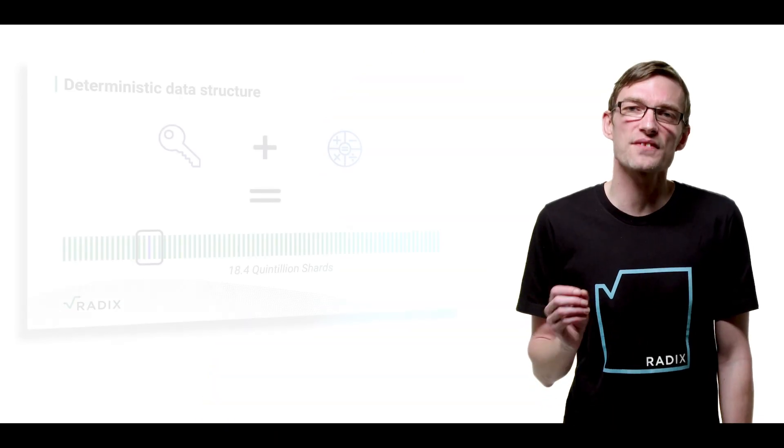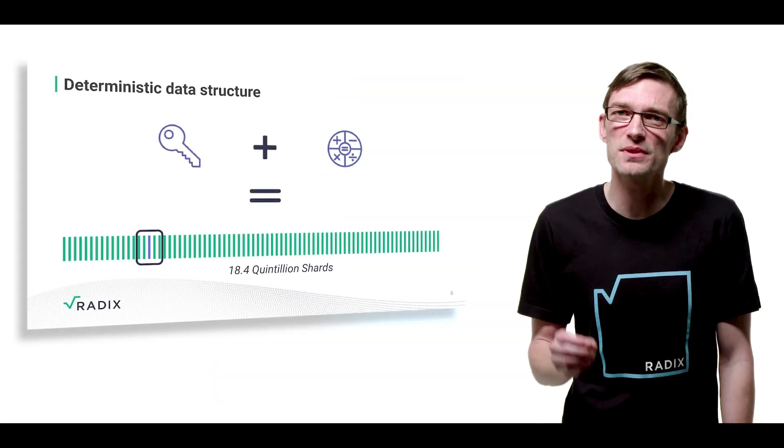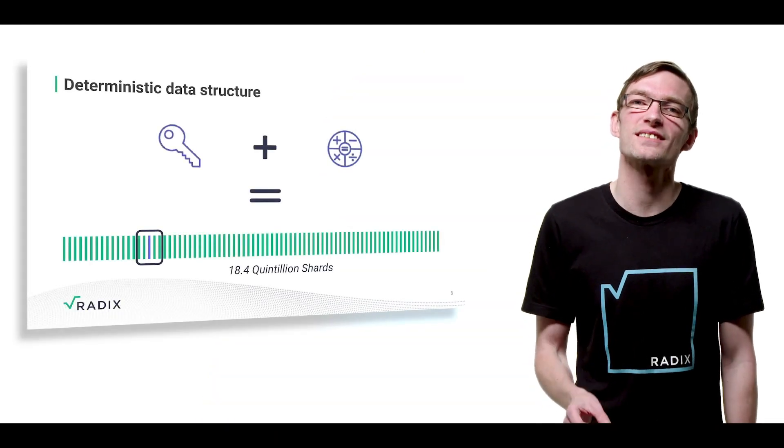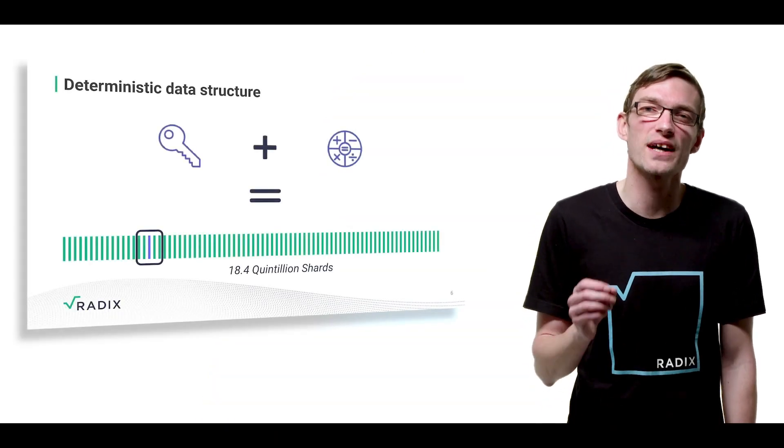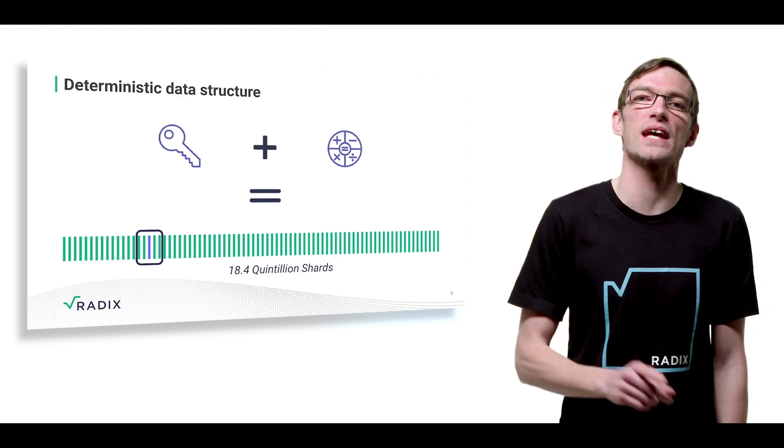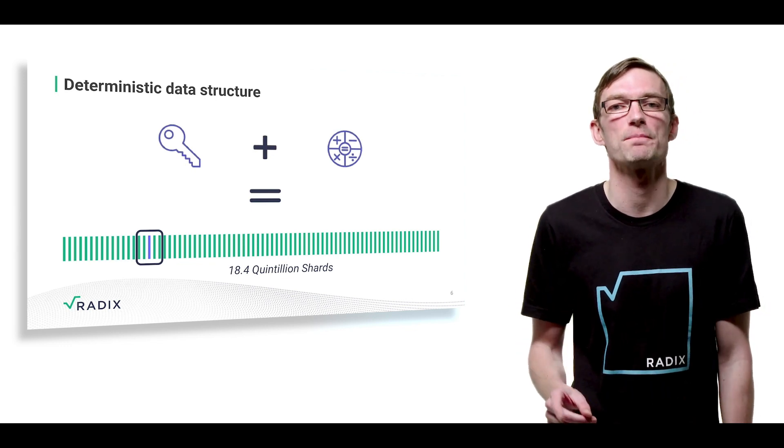This incredibly fine-grained data structure not only allows Radix to store incomprehensible amounts of data, it also makes it incredibly easy to find the data that you want. This is thanks to a deterministic process that identifies which shard any piece of data lives within.